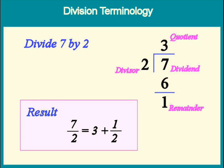Before we begin, we need some terminology. We all know that 7 over 2 is equal to 3 plus a half, but let's write it in long division notation so we can introduce the terms.